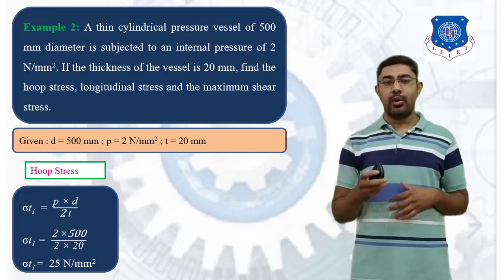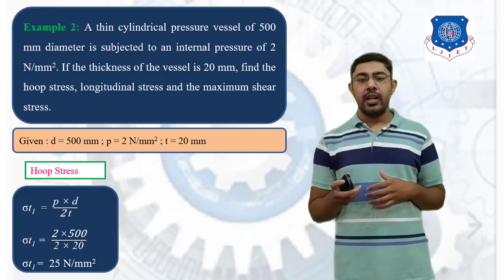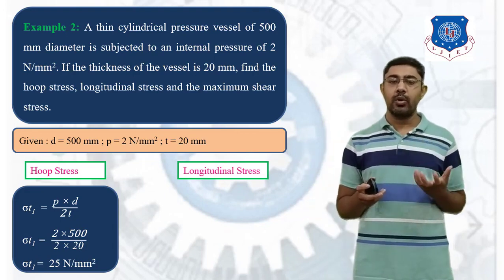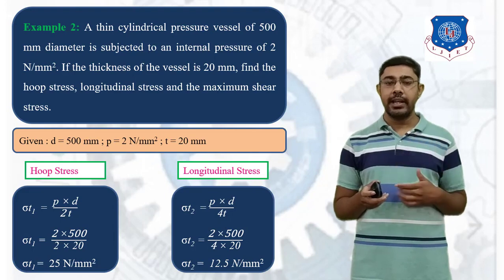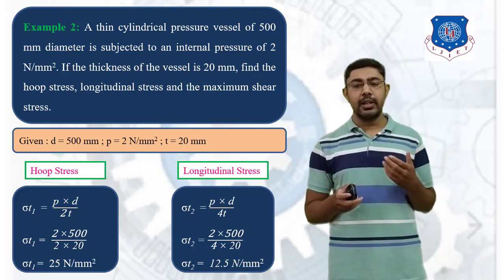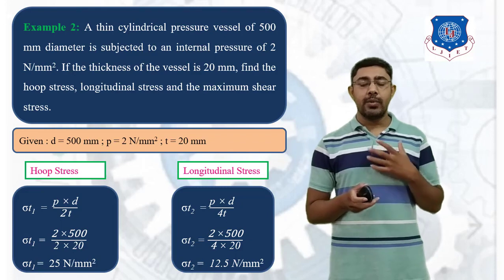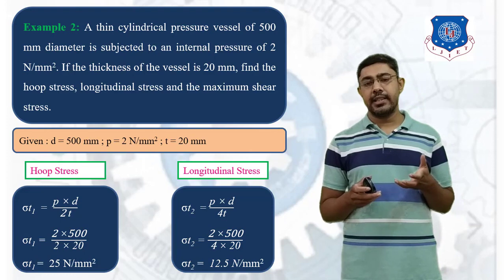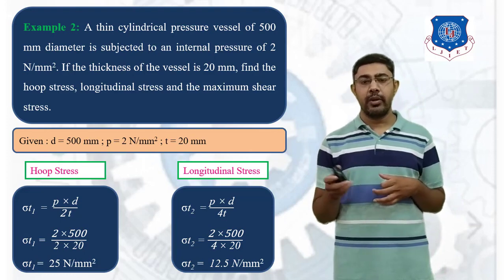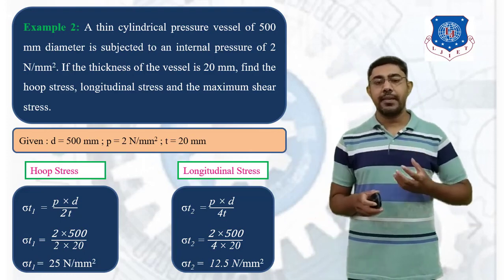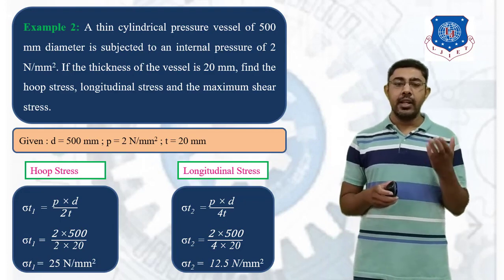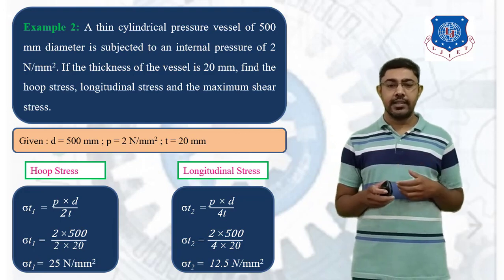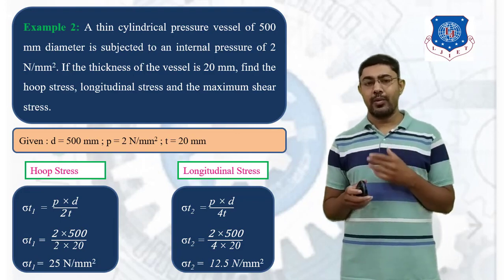Next, calculate the longitudinal stress sigma T2 = P·D / (4T). Placing the values of P, D, and T, we get sigma T2 = 12.5 N per mm square. From these equations we can confirm that the hoop stress is twice the longitudinal stress, which is verified by our answers.